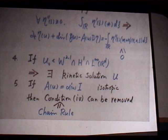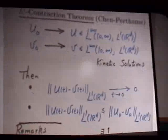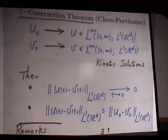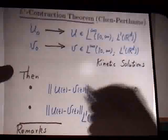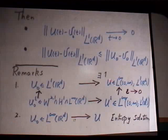Under these conditions, we can prove L^1 contraction: given two kinetic solutions u and v with initial data u₀ and v₀, the map t ↦ ‖u(t)−v(t)‖_{L^1} is non-increasing, bounded by ‖u₀−v₀‖_{L^1}. Using this theorem, we first obtain existence for L^1 initial data and, by L^1 contraction, a unique solution. Also, if the initial data is in L^∞, we can prove that any kinetic solution is indeed an entropy solution of the original equation in the classical sense.